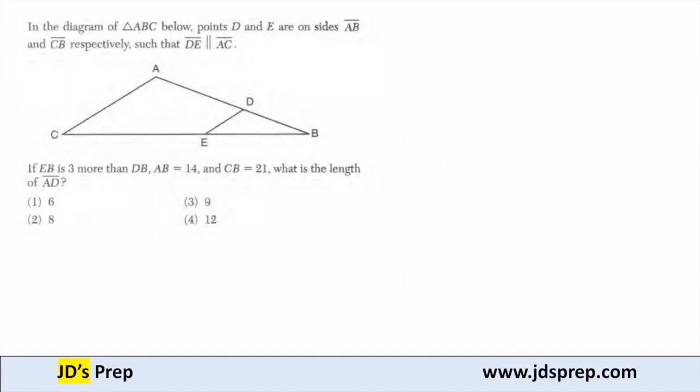Hello, welcome to JD's Prep. In this example, the diagram of triangle ABC below has points D and E on sides AB and CB respectively, such that DE is parallel to AC.